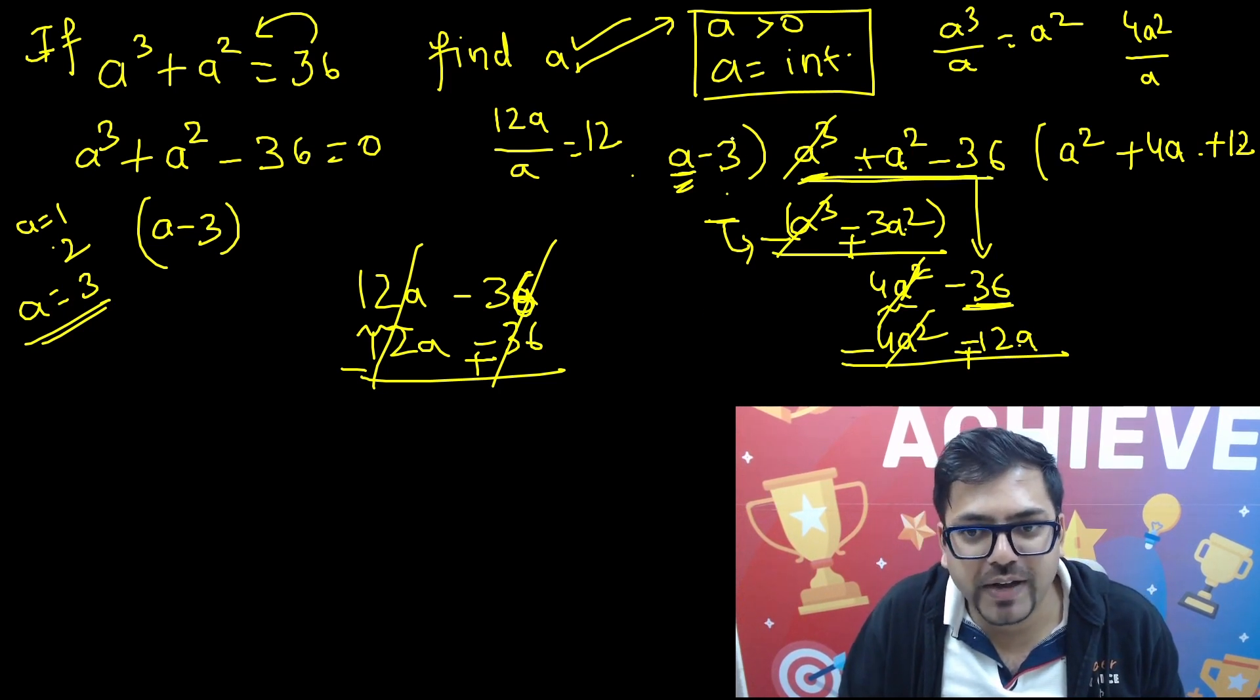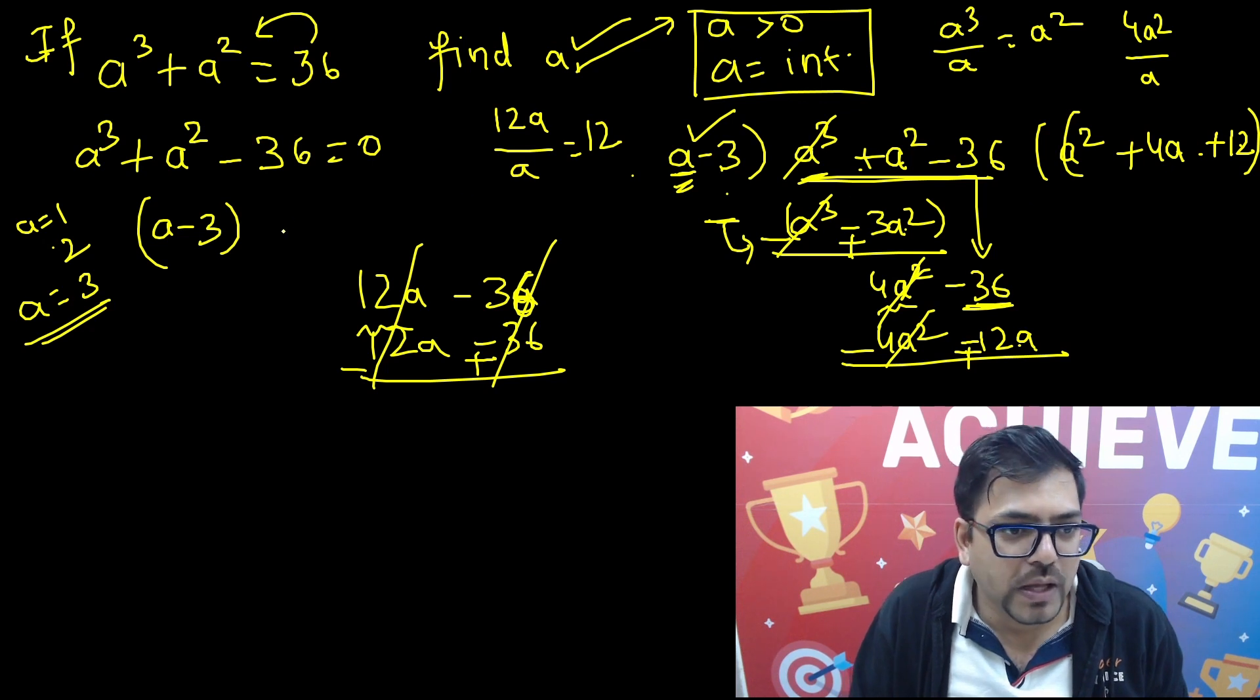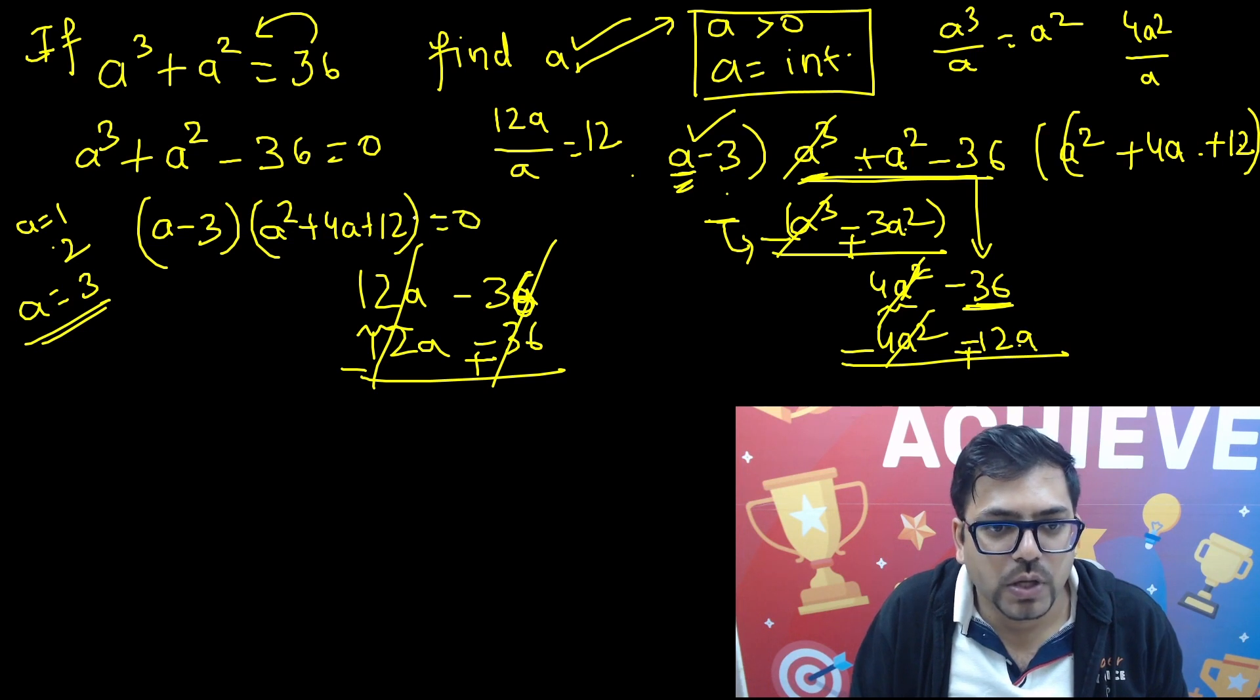Reverse the sign, they get cancelled. So finally we have got that this cubic equation can be factorized as (a - 3)(a² + 4a + 12). This equals 0.